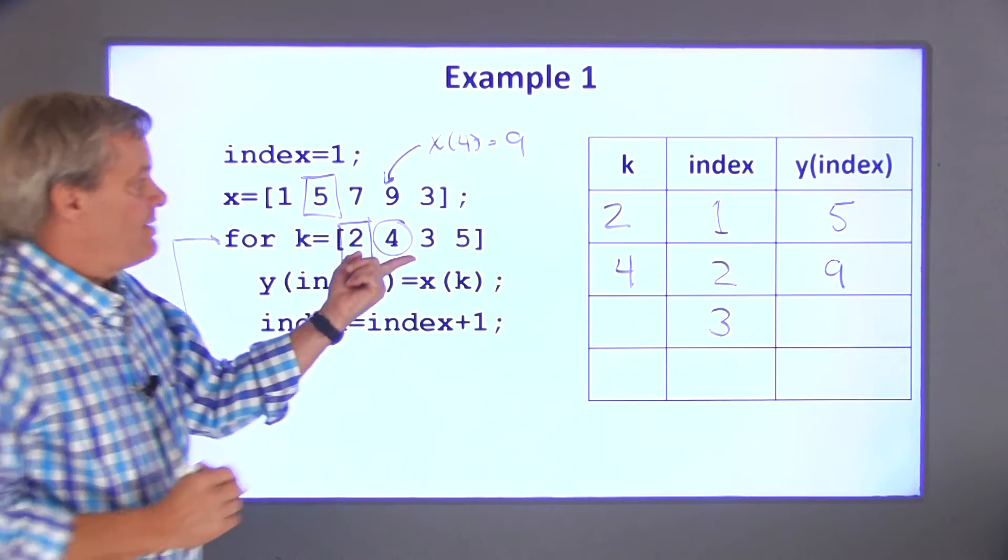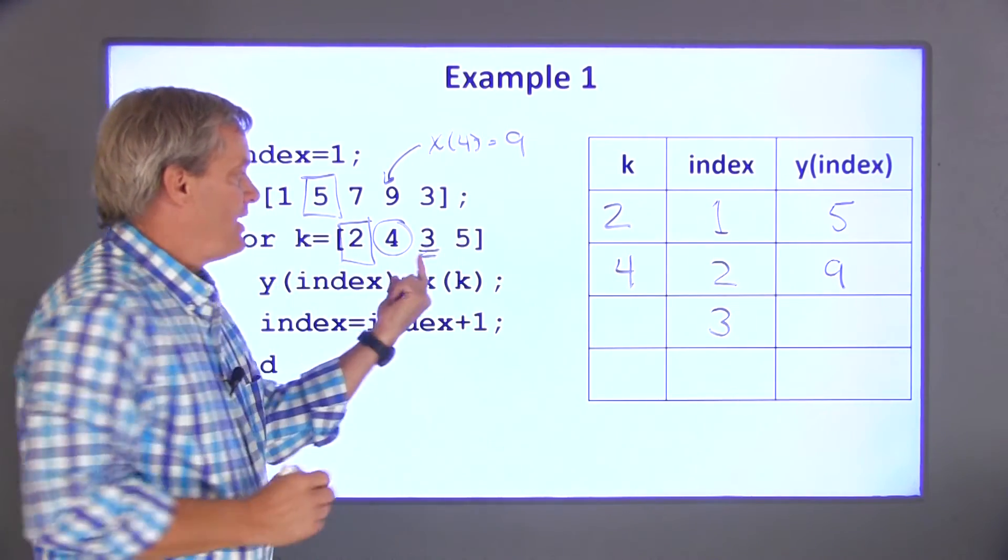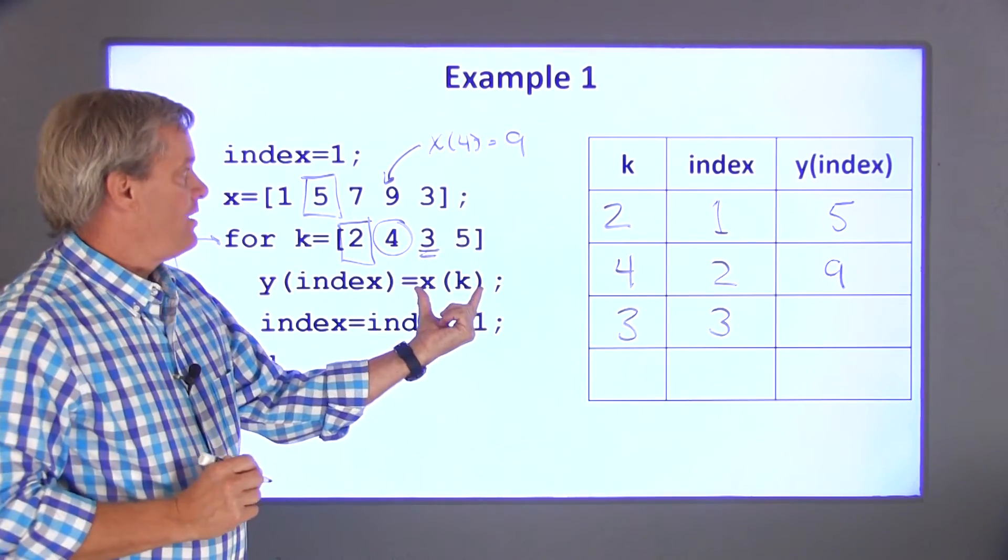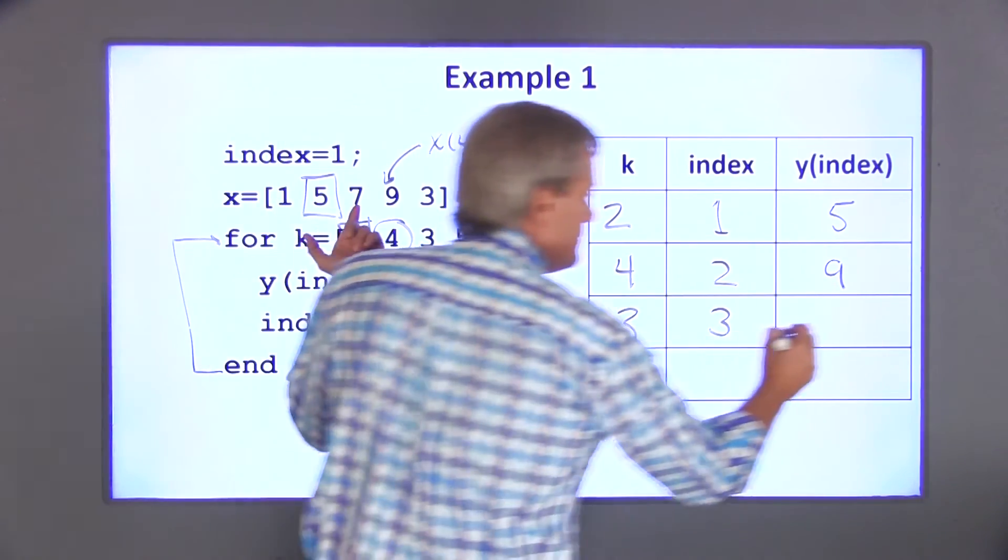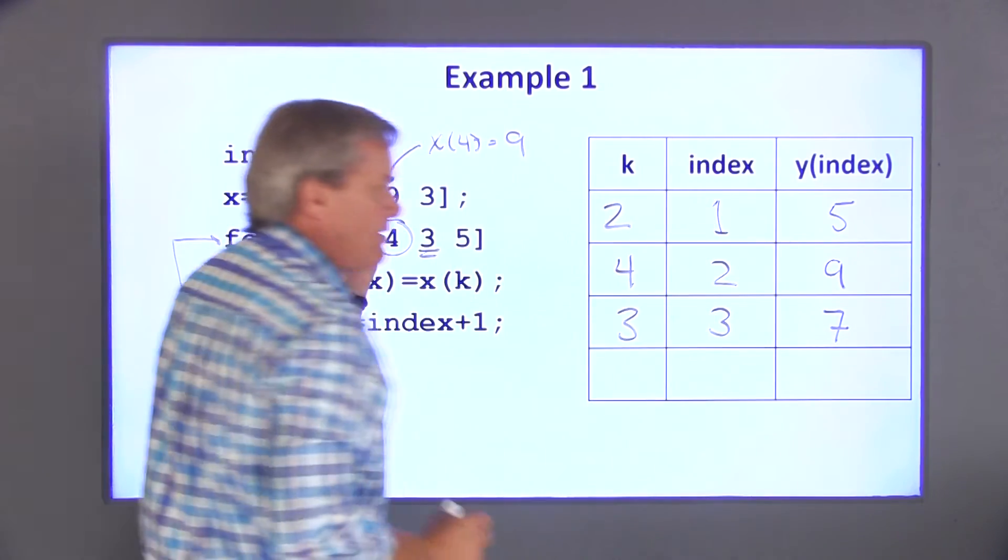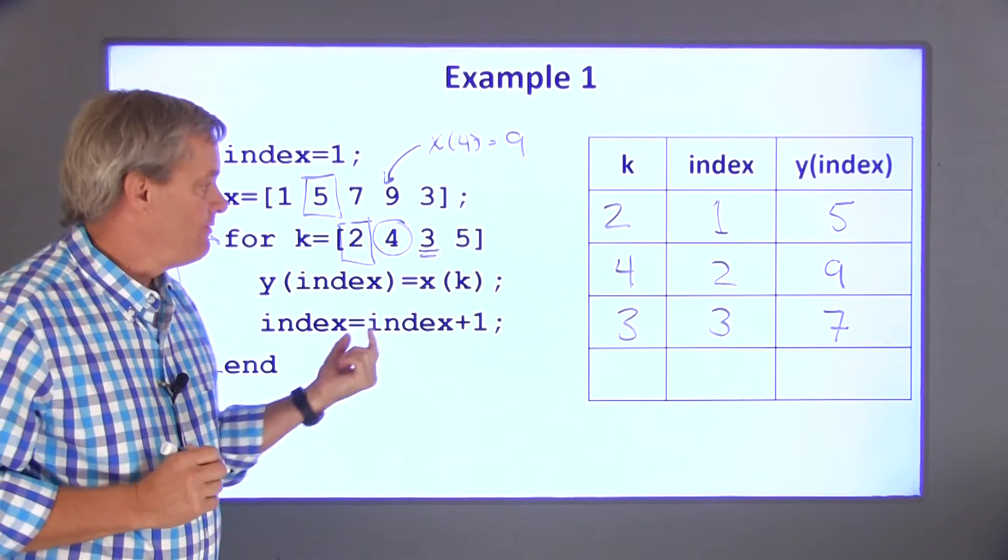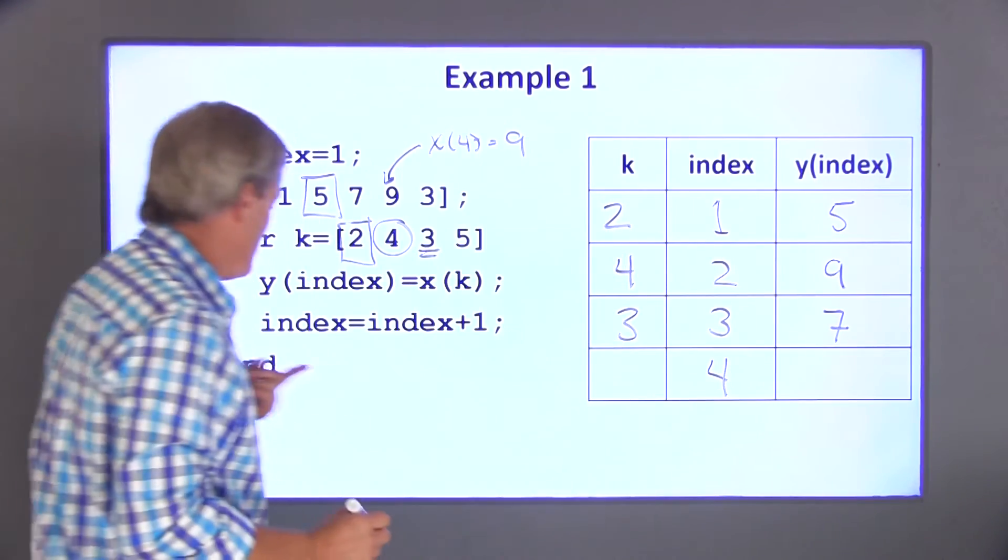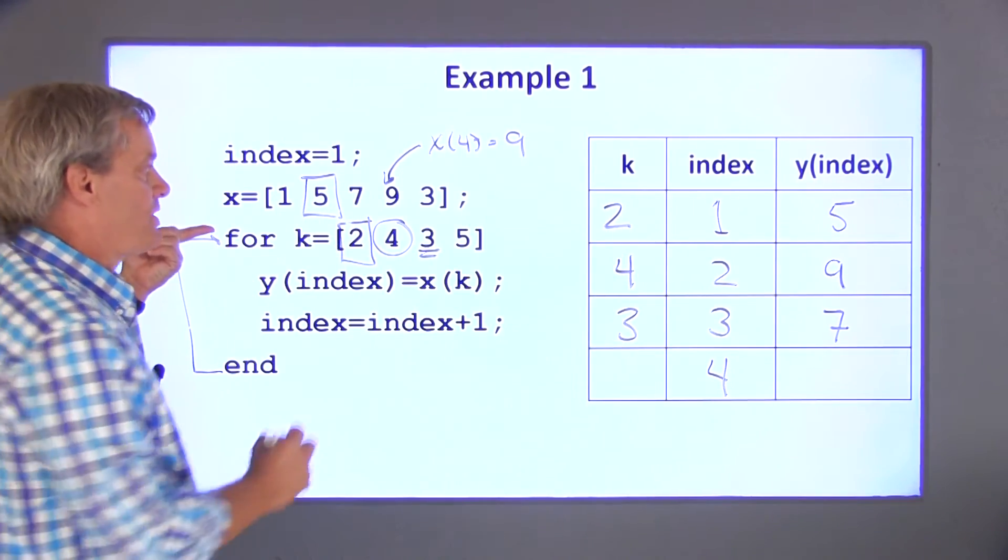Hit the end statement. Go back up to the for statement. I get to the next element in this array. So k is equal to 3. The third element in x is 7. y gets set equal to x of 3. So y of index is 7. Index gets updated to 4.